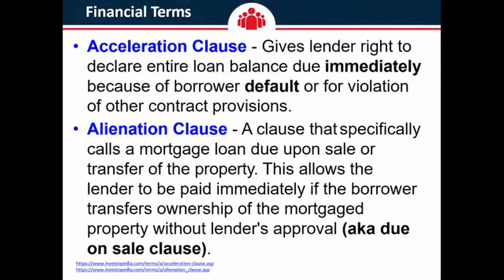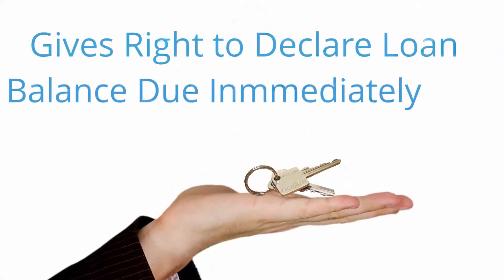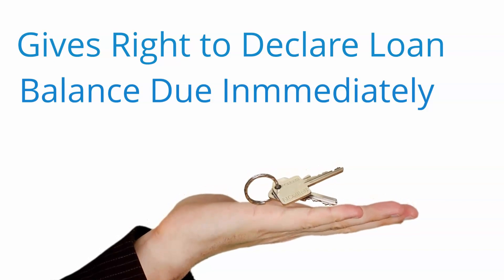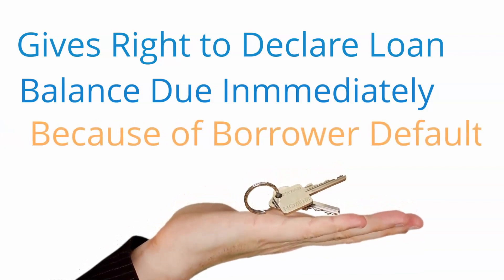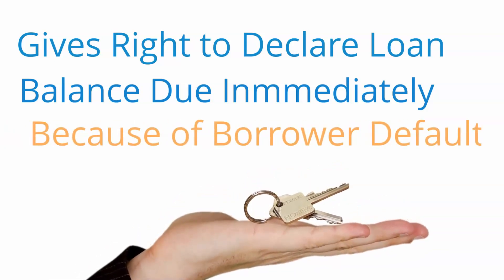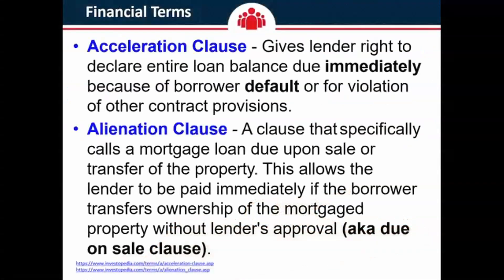People get acceleration clause and alienation clause mixed up. You need to understand the acceleration clause has to have two points. It gives the lender the right to declare the entire loan balance immediately due — because the borrower is in default. We want all the money now, because you're late. If they want all the money for any other reason besides the borrower being in default, it's not an acceleration clause.